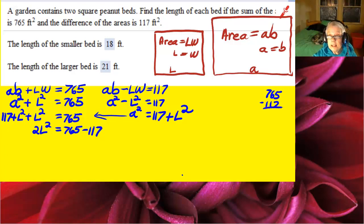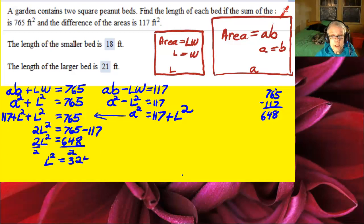Now, 765 minus 117—I didn't have a calculator with me, so I just used my fingers, the original approach—2L squared equals 648 square feet. Divide both sides by 2, and you'll have L squared equals 324.